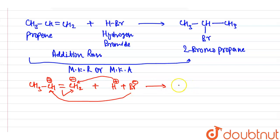Bromine attacks in the positive part and hydrogen plus H+ attacks in CH2 negative part. So our major product is CH3CHBrCH3.